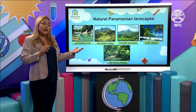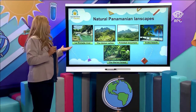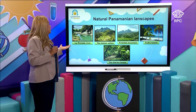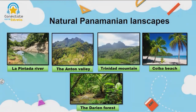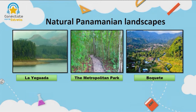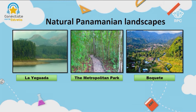Our Panamanian natural landscapes are, for example, La Pintada River, the Anton Valley, Trinidad Mountain, Coiba Beach, the Darien Forest, La Lleguada, the Metropolitan Park, and Boquete.